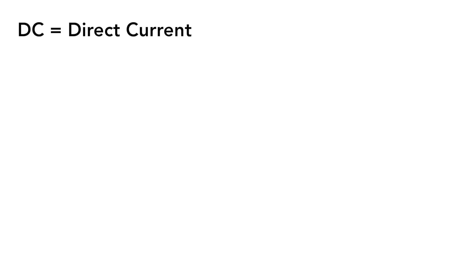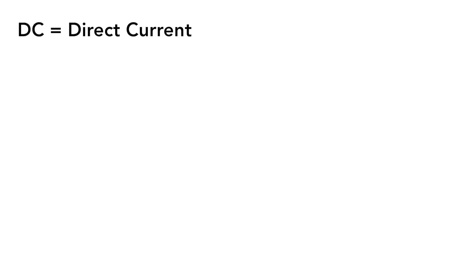Let's start by talking about DC power. DC stands for direct current, and what this means is the electricity flowing through the line is going in one direction only — from point A to point B. When it comes to DC power, it's usually found in lower voltage applications such as 12 volts, 24 volts, or 48 volts.